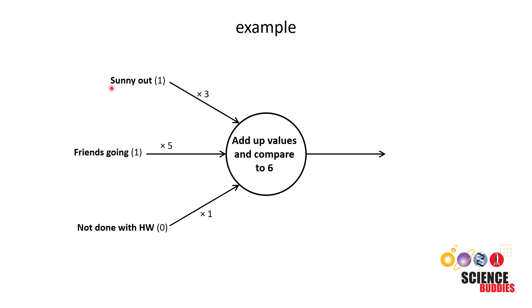For our example, let's say that it is sunny out so that input is one. Your friends are going so that input is one, but you are not done with your homework so that input is zero. We are then going to start with three randomly chosen weights. We'll say we have a weight of three for whether it's sunny, a weight of five for your friends, and a weight of one for your homework. We are going to multiply each input by its weight, add up those values, and compare to a threshold which is also randomly chosen to begin with. We've chosen a threshold of six and use that to determine the output.